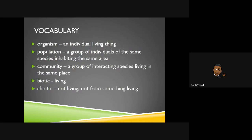Here, of course, is some vocabulary. Please feel free to pause this video at any time so you can get the vocabulary and write it down. Science is predominantly vocabulary, which you will need to know for your EOG, so definitely get these down in your notebook. First, we have organism — an organism is an individual living thing. Then we have population — that is a group of individuals of the same species inhabiting the same area.